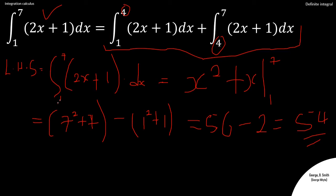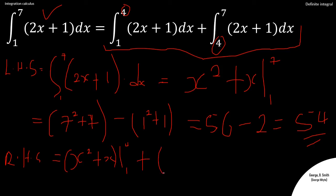Now for the right hand side, we have the integral from one to four plus the integral from four to seven of (2x + 1) dx. Integrating both gives x² + x — with limits one to four for the first part, and four to seven for the second. Let's substitute and simplify to see if we get 54.